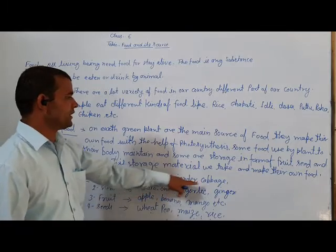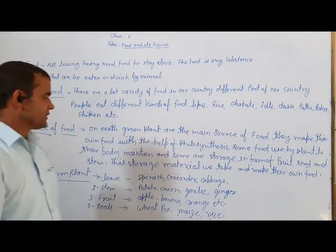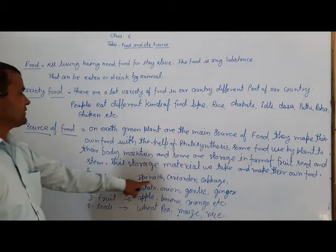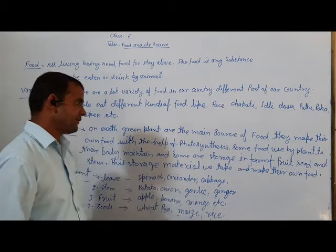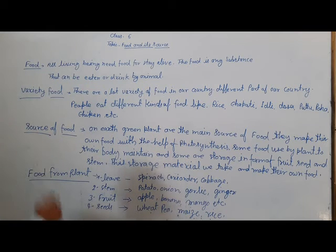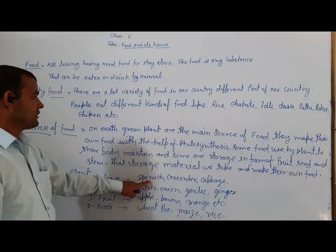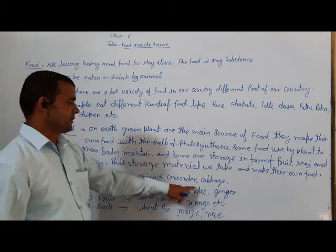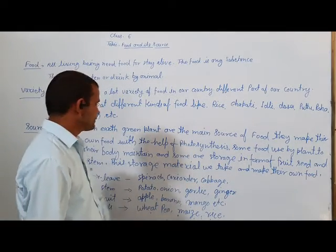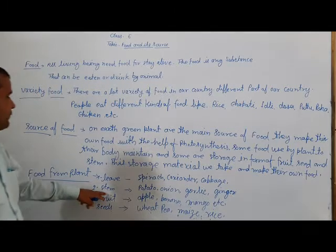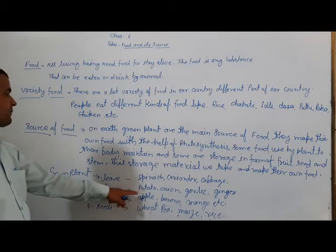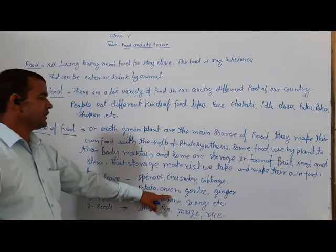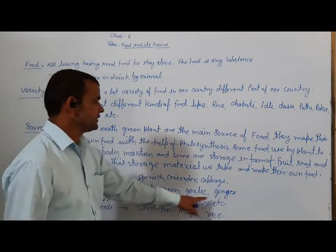Some food materials come from leaves. Some food materials are from the stem, such as potato, onion, garlic, and ginger.